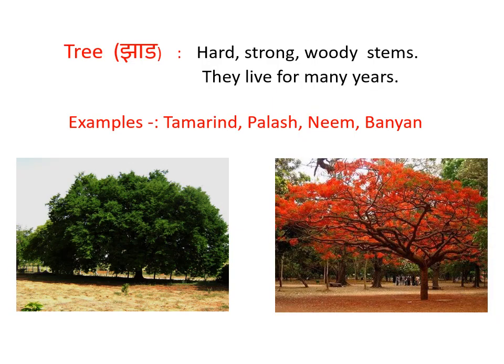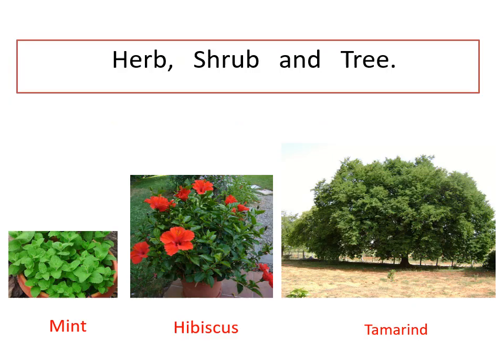The third type is tree. Trees are tall with hard, strong and woody stems, and they are normally with a thick canopy. They have branches at some height above the ground and they live for many years, so they are perennials. Common examples of trees include tamarind, palash, neem, and banyan tree. In this way we have classified plants according to the first criteria — their size and shape — into herb, shrub, and tree.